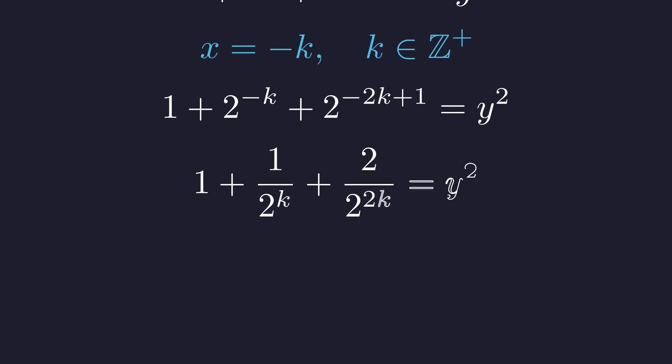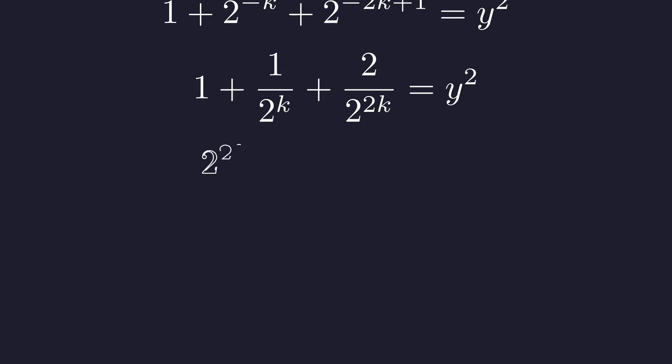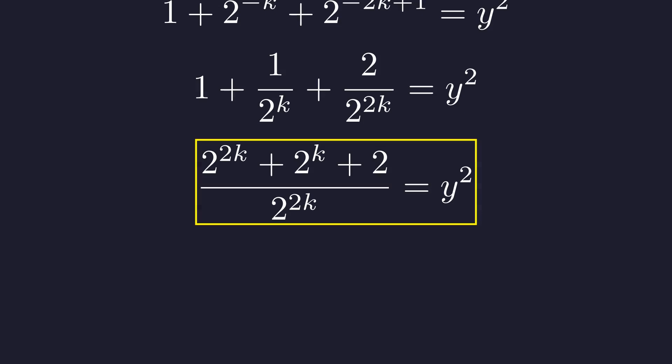Now we can see the fractions clearly. To combine these terms, we'll need to find a common denominator. The common denominator is 2 to the power of 2k. Now, for y to be an integer, this fraction must be a perfect square. Here's the key insight. The denominator, 2 to the 2k, is already a perfect square. It's 2 to the k, all squared.